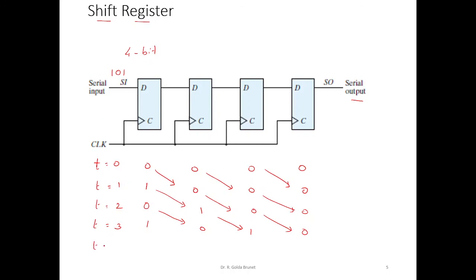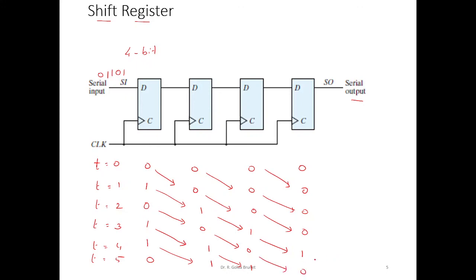At time t=4, another 1 arrives and is accepted by the first flip-flop, shifting the previous bits forward. At time t=5, a 0 comes in, the 1 shifts further along, and the oldest bit is shifted out and discarded from the shift register. This is how the shift register operates.